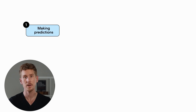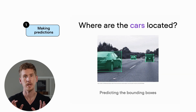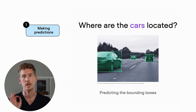However, there are many types of prediction problems. Beyond the classic label prediction problem, there's also something called object detection. Here's an example where a machine learning system is used to locate cars, let's say in a video stream or in images.